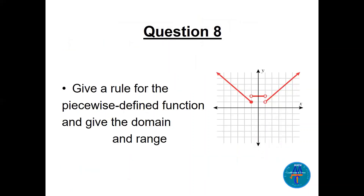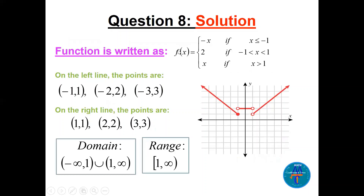Question 8: given a piecewise graph, find the rule, domain, and range. The graph has three pieces: a straight line for x<-1, a constant at 2 for -1<x<1 (open), and f(x)=x for x>1 (open). The domain is (-∞, 1) ∪ (1, ∞) — with 1 excluded. The range is [1, ∞) on the y-axis.